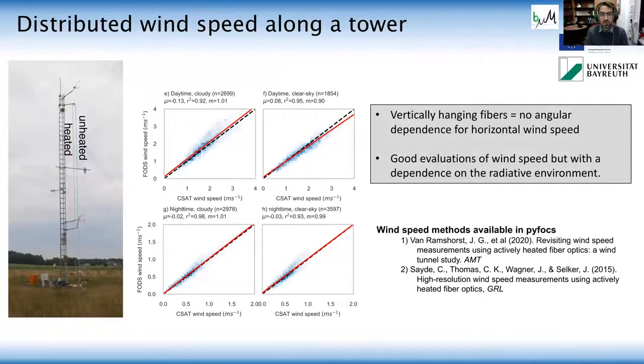And the first thing I'll talk about is with these unheated or with these actively heated fibers is that again, they act as like a giant hot wire anemometer and kind of one of the critical things that we've done is that in the past, they've been laid out horizontally, and now we put them vertically and this removes one of the key constraints for us, which was this angular dependence.